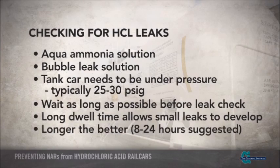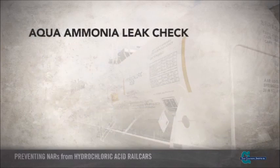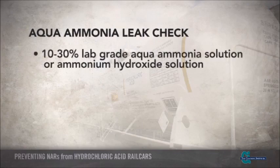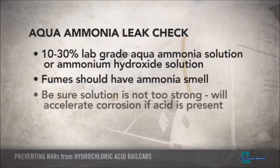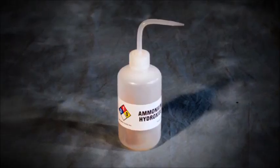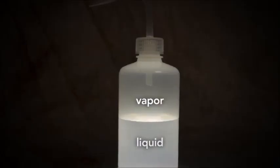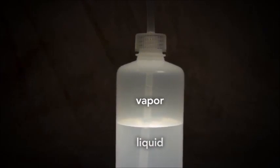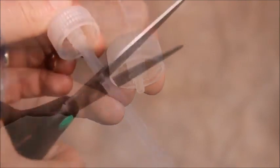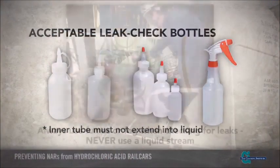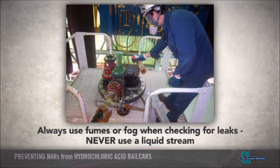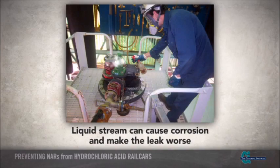If an aqua ammonia solution is used for leak checking, there are some important tips to keep in mind. It is recommended to use a 10–30% lab grade aqua ammonia or ammonium hydroxide solution. This mixing does not have to be precise; however, you want the fumes to have a noticeable ammonia smell. Be sure the solution is not too strong, because a strong solution will accelerate corrosion if acid is present. A common dispersal method is to use a squeeze bottle with an internal tube that only extends into the vapor space of the bottle. If the bottle has an internal tube that extends into the liquid space, it is suggested to either remove the tube or cut it to a length that extends only into the vapor space. It is very important not to use a liquid stream when performing the aqua ammonia leak check, because if a leak is present, the liquid can cause corrosion and make the leak worse.